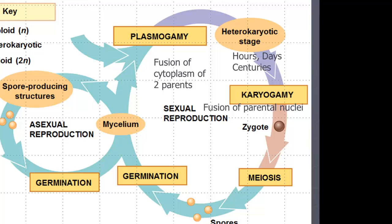For sexual reproduction, our plus hyphae and our minus hyphae are going to get together and fuse in a process called plasmogamy. The cytoplasm of these two structures will fuse and put our fungi in what's called the heterokaryotic stage.